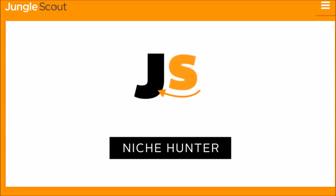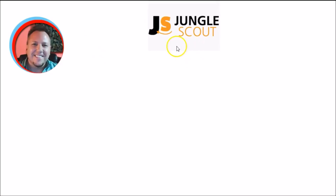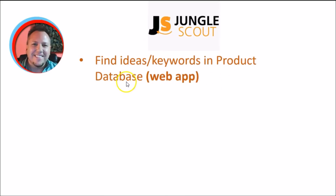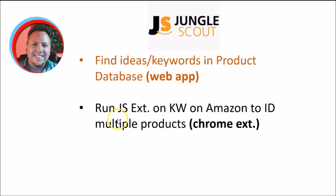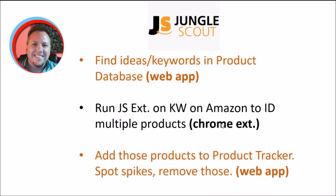Here's Jungle Scout's recommended process when using their products. First, find your ideas and keywords in the product database — that's using the web app, which has several helpful tools. You also want to run the Jungle Scout extension in your Chrome browser on the keywords while you're on the Amazon site, to identify multiple products using the Chrome extension. Then, once you do that, add those products to the product tracker within the web app, which helps you spot spikes in these products.